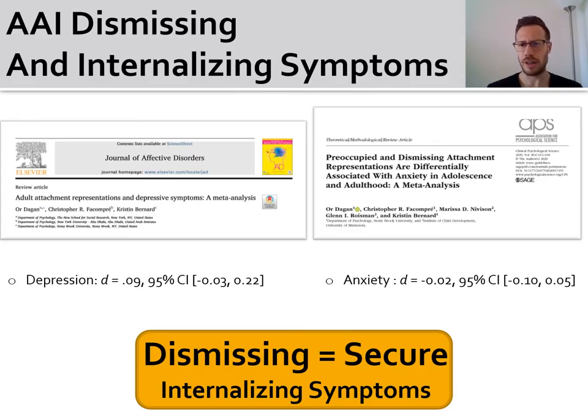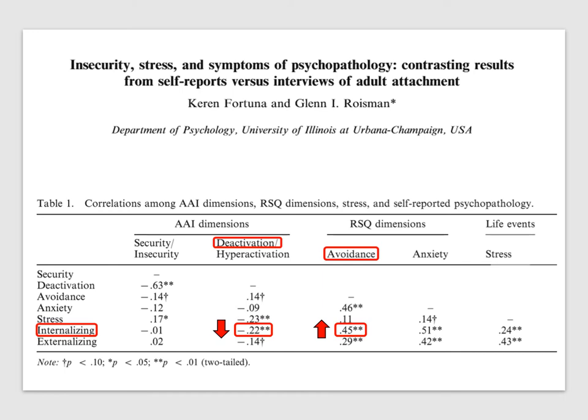However, two large-scale meta-analyses that our group published in the past two years, assessing between 4,000 and 5,000 individuals, showed that AAI-dismissing individuals did not endorse significantly more depressive or anxiety symptoms compared to their secure counterparts. Interestingly, more evidence to support the divergent links between the two attachment tradition assessments and internalizing symptoms can be found in the only study to my knowledge that assessed both AAI-insecure dismissing and self-report insecure avoidance within the same participants to predict internalizing symptoms. As you can see on the left column, those who scored higher on the dimensional AAI-dismissingness tended to endorse significantly lower internalizing symptomatology.